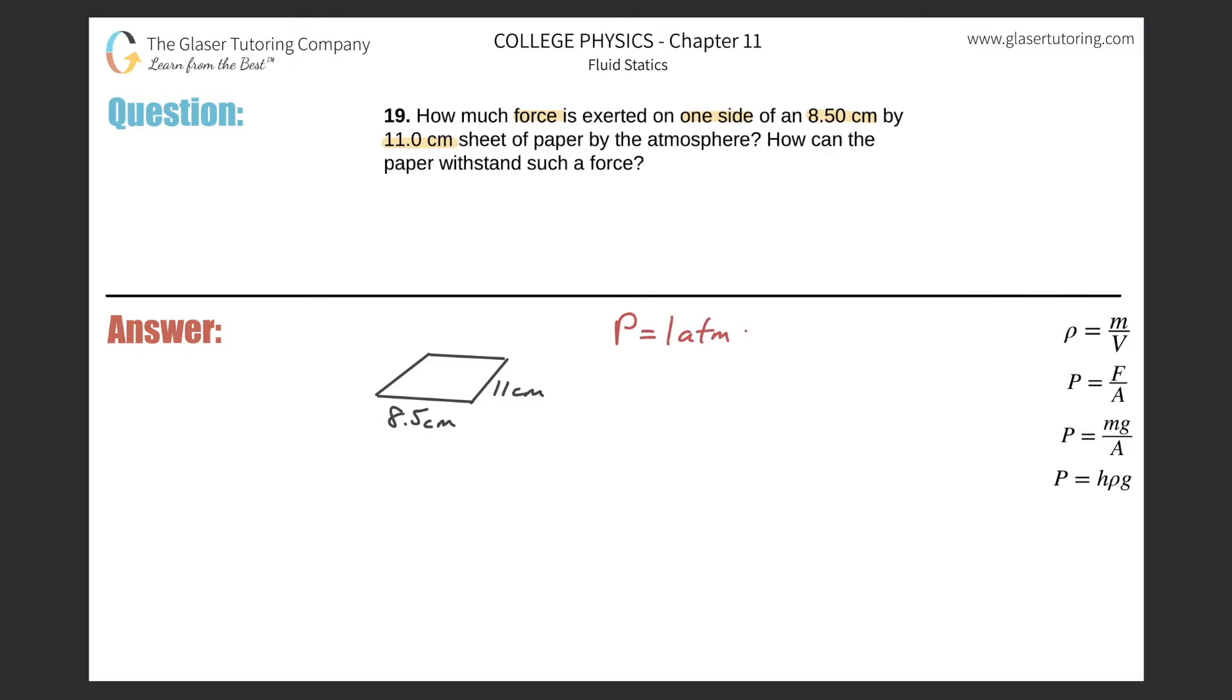Now when you talk about using your formulas here for pressure, you have to have the units in terms of Pascal. And therefore we know the equivalence of an atmosphere to Pascal is 1.01 times 10 to the fifth Pascals.